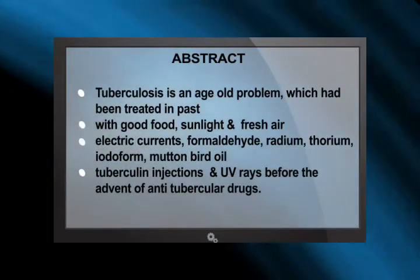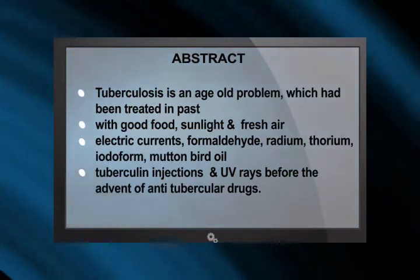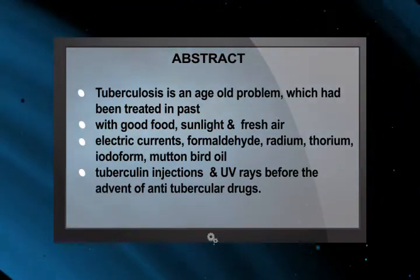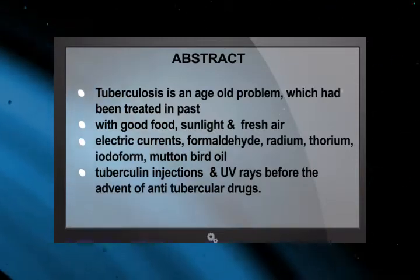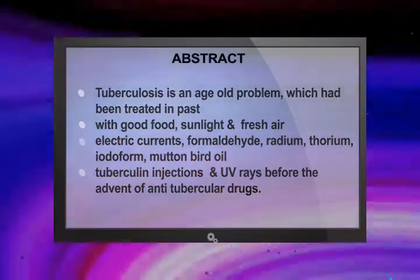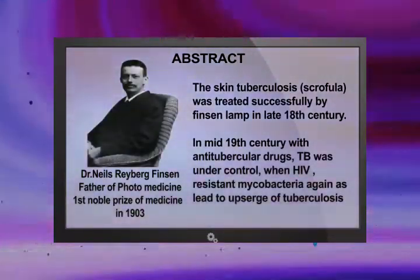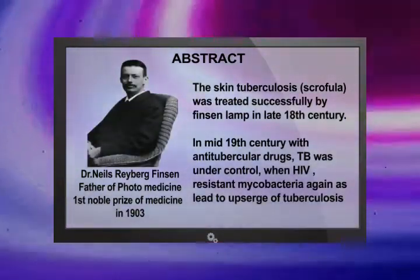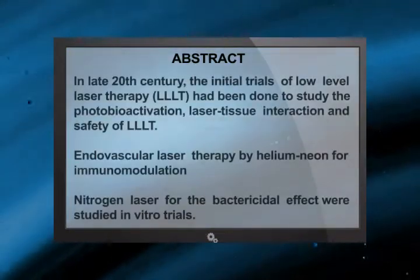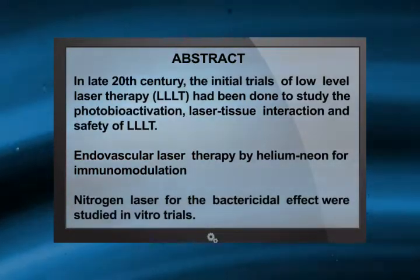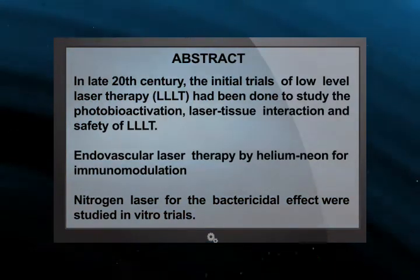Before the advent of anti-tubercular drugs, people used to treat tuberculosis with electric currents, formaldehyde, radium, thorium, and other agents apart from good food, sunlight, and fresh air. Dr. Neal Sriburg Finson treated skin tuberculosis successfully by UV rays. Laser came into existence in the late 20th century, and helium neon and nitrogen laser started being used in these trials.